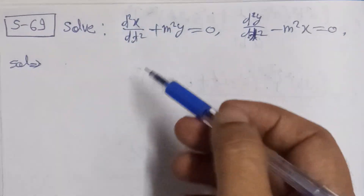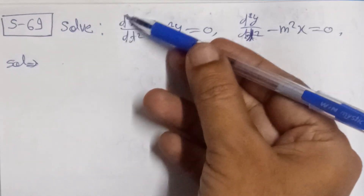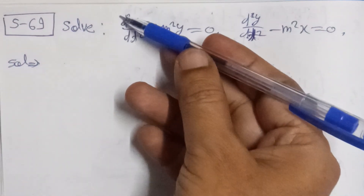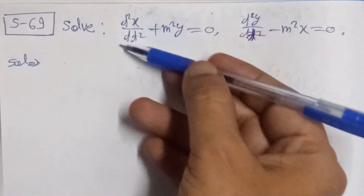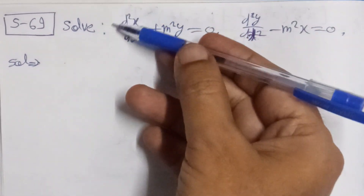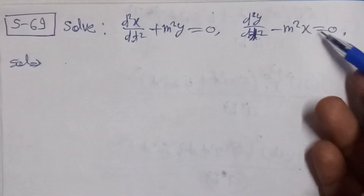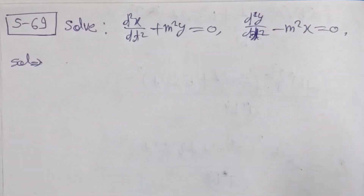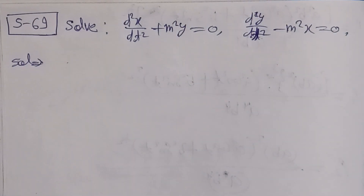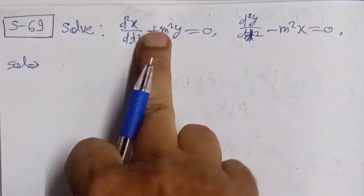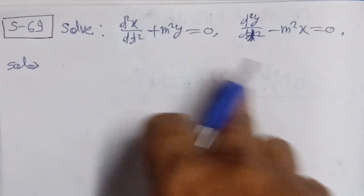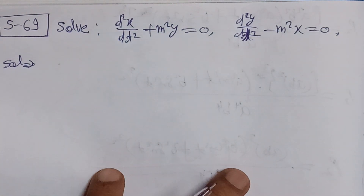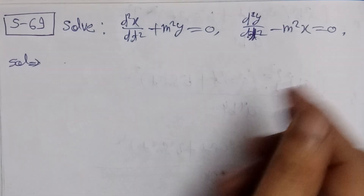This is called linear because the power of y and the power of the derivatives of x are all equal to one — whether it is a second derivative or first derivative. We need to solve both equations together simultaneously. First, let us write this in operator notation.